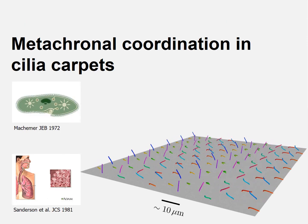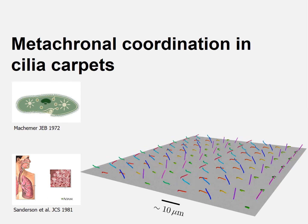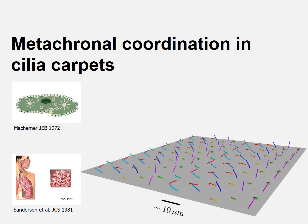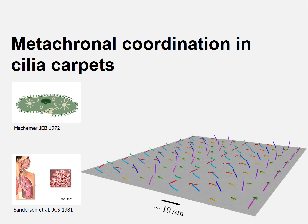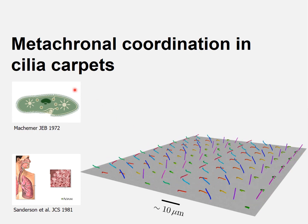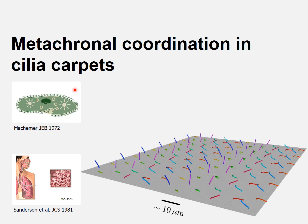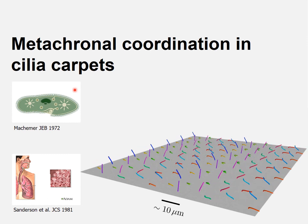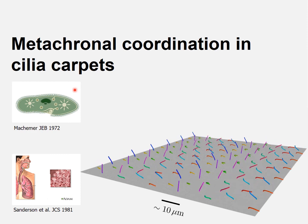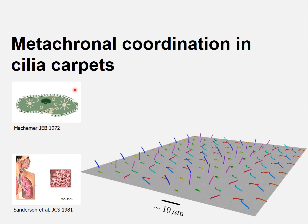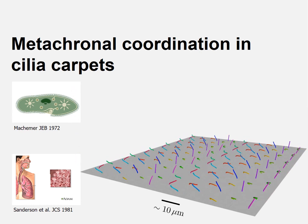What are cilia carpets? Cilia carpets are slender appendages of cells that can perform regular bending waves thanks to the action of molecular motors inside. Some cells, like this unicellular paramecium, are covered by thousands of cilia that beat in a coordinated fashion, forming traveling waves of cilia phase similar to a Mexican wave in a soccer stadium.